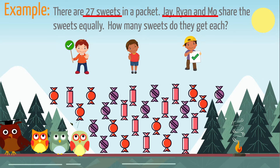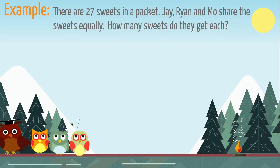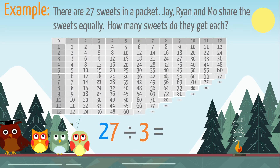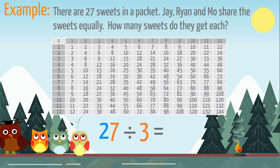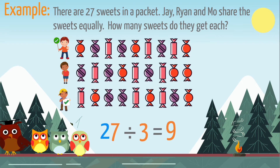Because they are sharing something equally, we need to solve a division calculation. The calculation we need to solve is 27 divided by 3. We can use a division fact from our 3 times tables to work out the answer. 27 divided by 3 equals 9. So Jay, Ryan and Mo each get 9 sweets.